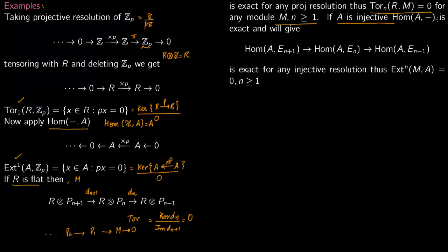Now if A is injective, then this Hom(-, A) is exact. We have seen before, so again you put this as exact sequence, kernel will be equal to image, so Ext group will be 0, because Ext is equal to kernel over image and this kernel is equal to image here.